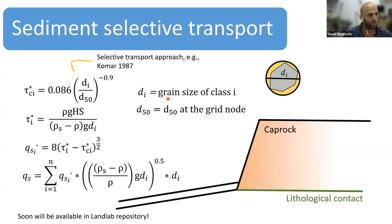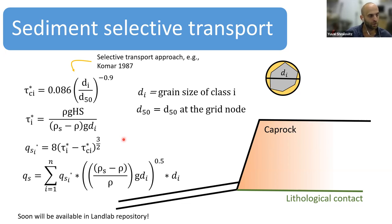Sediment transport of clasts is calculated based on the shear stress exerted by the overland flow. We choose to include a selective transport scheme in which the transport of a given size fraction depends not only on the size itself, but also on the size of the surrounding grains. The total flux from a specific node will be the sum of fluxes for all size fractions and all size classes of fragments included in that specific node on the slope.